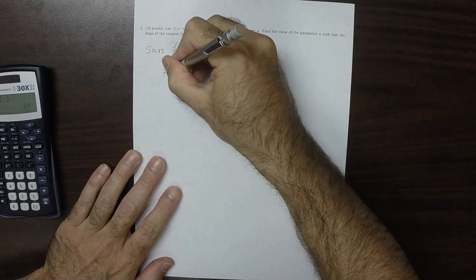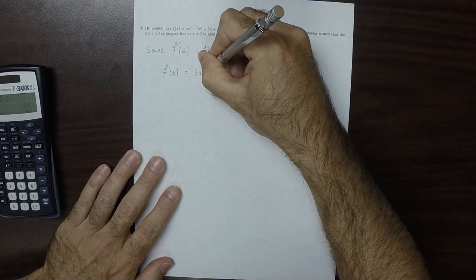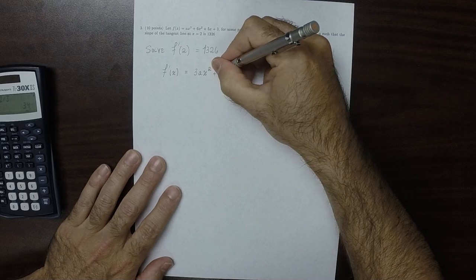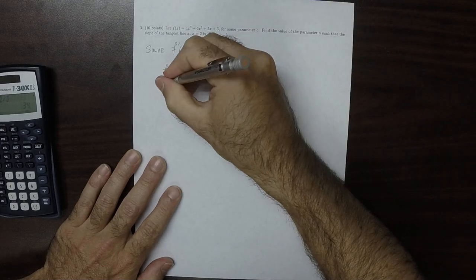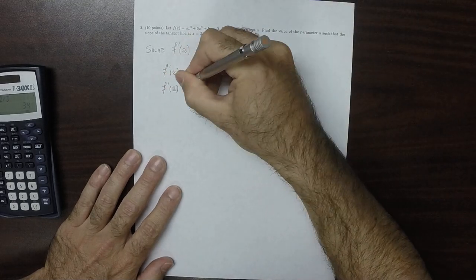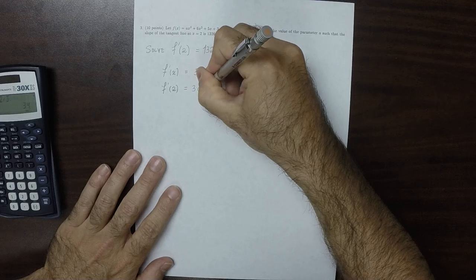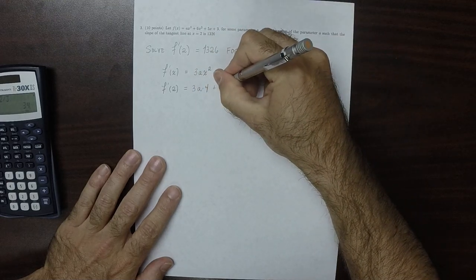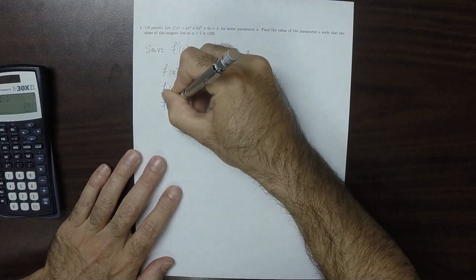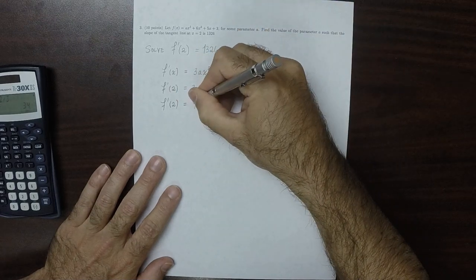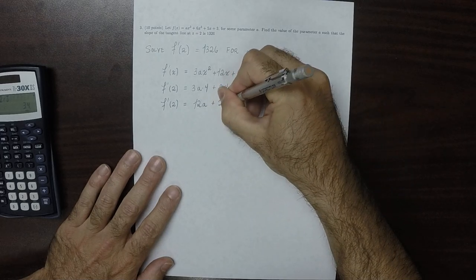So in the first place, we'll need the derivative. That is 3Ax squared plus 12x plus 5. And then the derivative evaluated at 2, well that would be 3A times 4, because that's 2 squared, and then plus 24 plus 5. So simplifying, the derivative evaluated at 2 is 12A plus 24 plus 5, so plus 29.